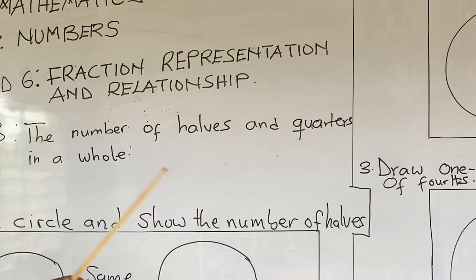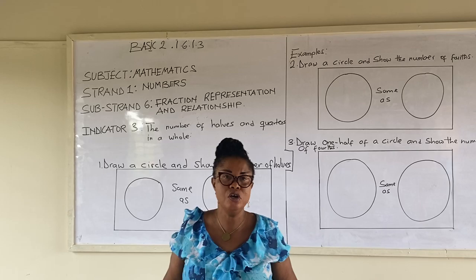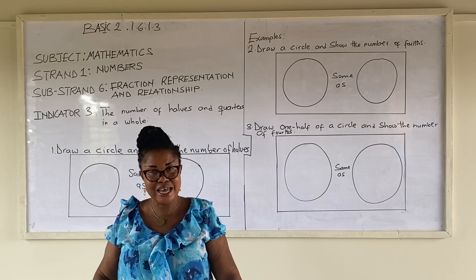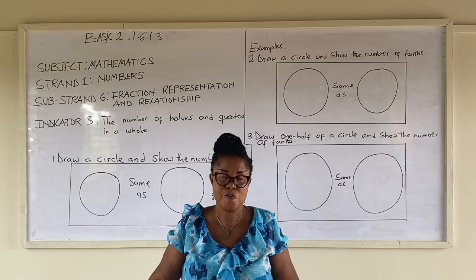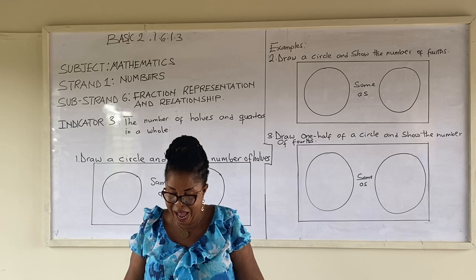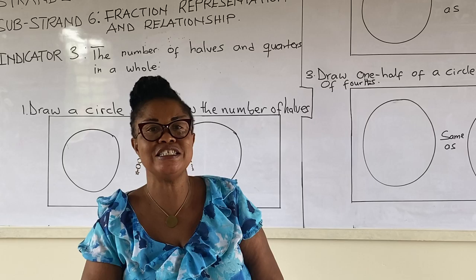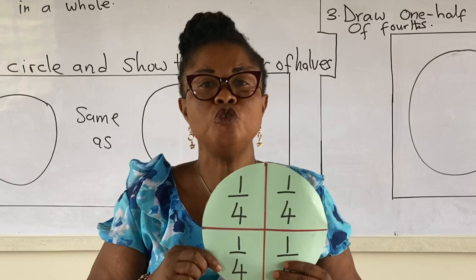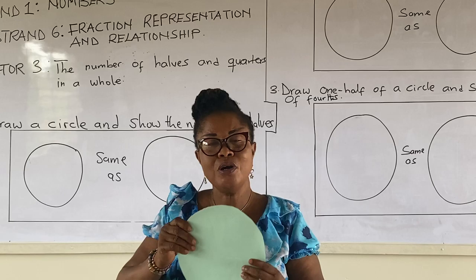And before we continue, from our previous knowledge, we know what a fraction is. A fraction is part of a whole. When a whole is equally divided into two, we have a half. When a fraction is equally divided into four, one of the parts is known as a quarter.